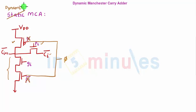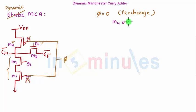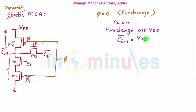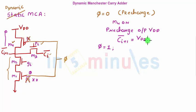Let's see how this dynamic circuit operates. When PHI equals zero, that is the pre-charge phase. Let's label all transistors: M1, M2, M3, and M4. When PHI equals zero, M4 is on and pre-charges the output to VDD, so CI+1 bar equals VDD. In dynamic circuits we don't do anything in the pre-charge phase. Also, M1 receives zero at its input so it is off, the pull-down path is off, and there are no inputs on G and P, so CI+1 bar remains at VDD.